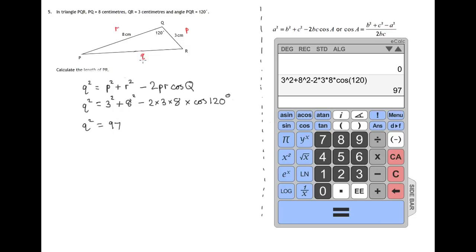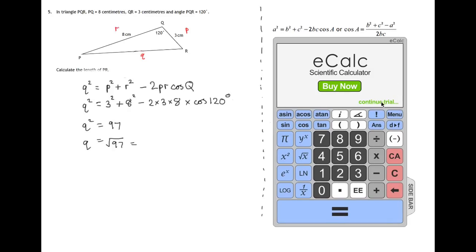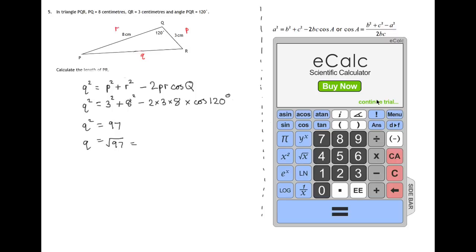And that's this side squared. So we now need to work out the square root of that. And the square root of 97, square root of that answer. And there's the answer. So it's 9.848, and so it goes on.